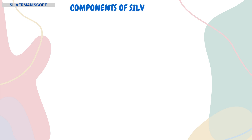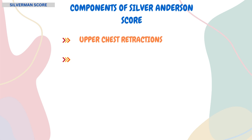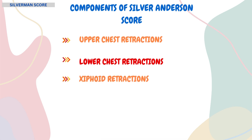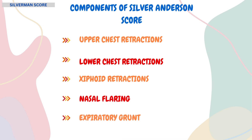Now let's discuss the components of the Silverman Anderson score. It comprises five components: upper chest retractions, lower chest retractions, xiphoid retractions, nasal flaring, and expiratory grunt.